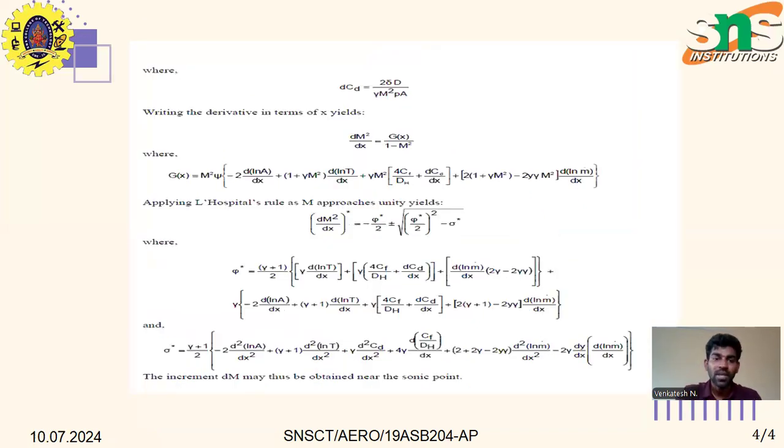The coefficient for the change of Mach number is: dM²/dx = g(x) divided by (1 - M²), where the Mach number value is one depending on the flow region. Applying L'Hôpital's rule: dM²/dx = -Ψ/2Σ* ± √[(Ψ/2Σ*)² - Σ*], where Σ* and Ψ terms are defined, with Σ* = (γ+1)/2.